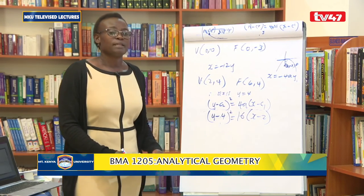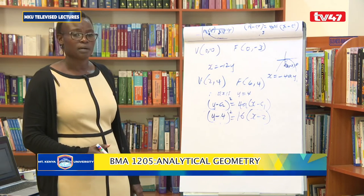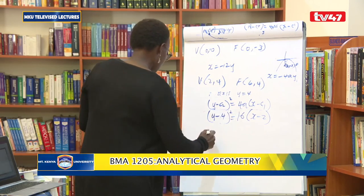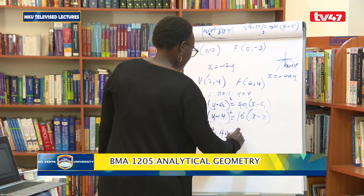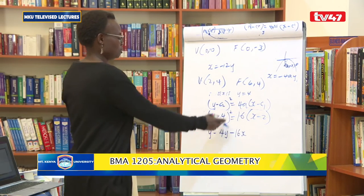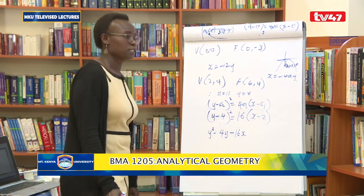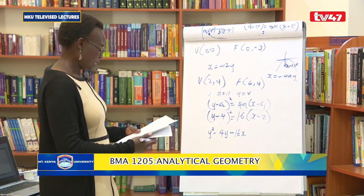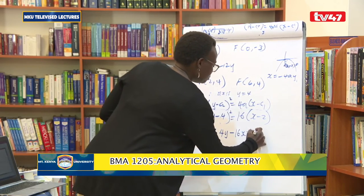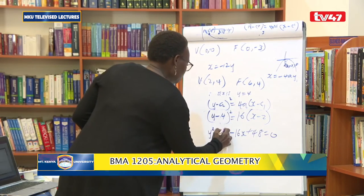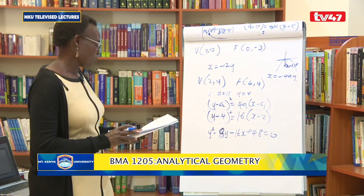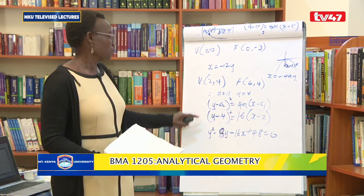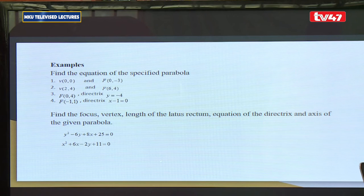The general equation of a parabola is obtained by expanding the standard form. Expanding (y - 4)² = 16(x - 2) gives y² minus 8y minus 16x + 48 = 0 as the general equation of this parabola.